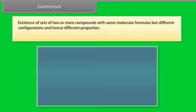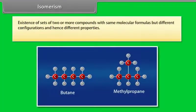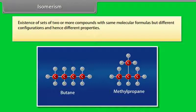Isomerism is the existence of sets of two or more compounds with same molecular formulas but different configurations and hence different properties. The compounds are called isomers.